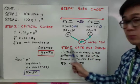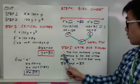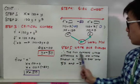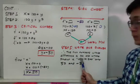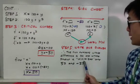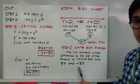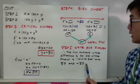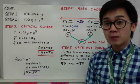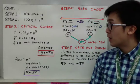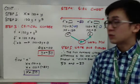Yung step number 5 is to organize my answer. Therefore, the two numbers whose difference is 100 and whose product is minimized are 50 and negative 50. Yan yung mga steps na gagamitin natin sa pag-solve ng problems ng optimization gaya nito.